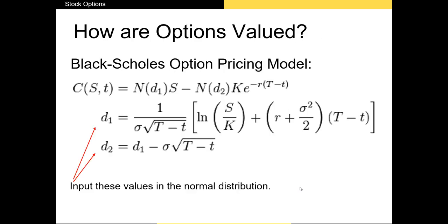Now let's talk about how we price options. For European options, we use the Black-Scholes option pricing model. This formula was developed in an academic paper by Fischer Black and Myron Scholes in 1973. It earned both Myron Scholes and Robert Merton, who performed follow-up work on the model, the Nobel Prize in 1997.